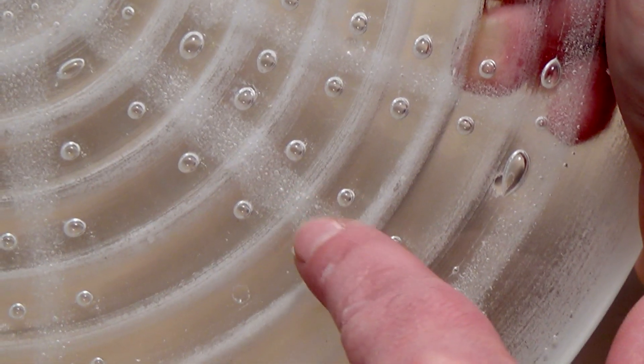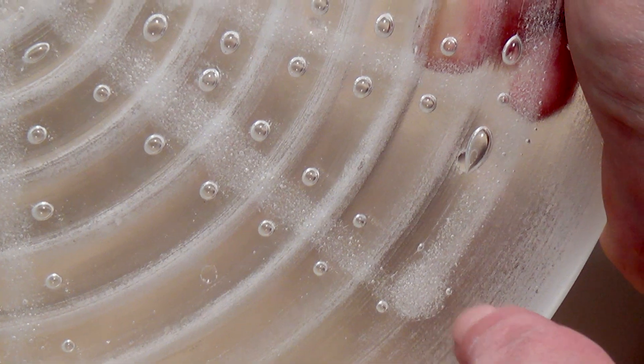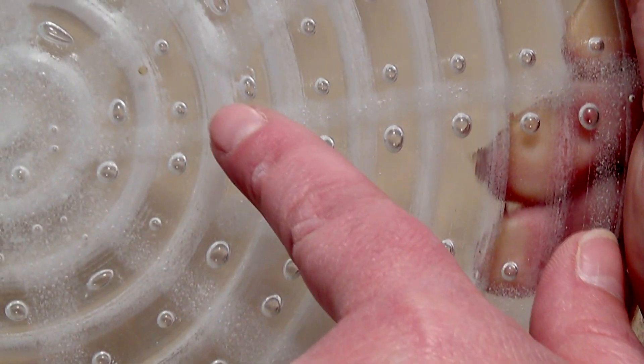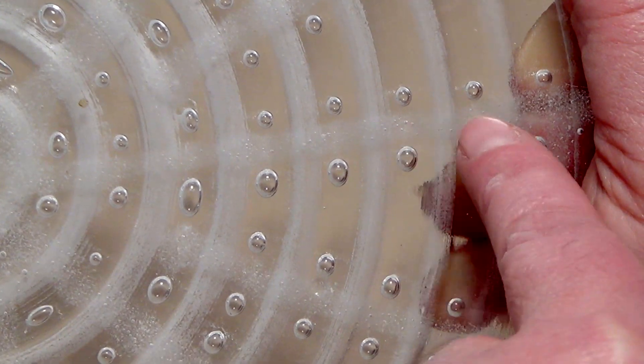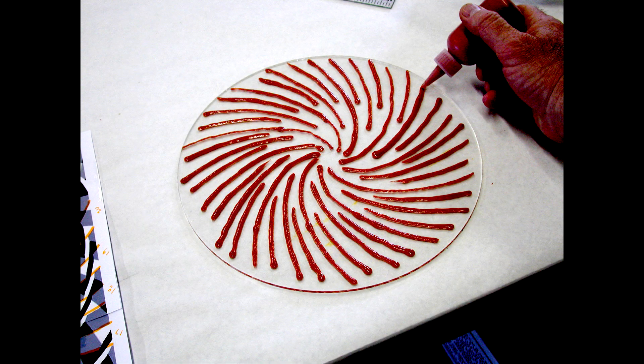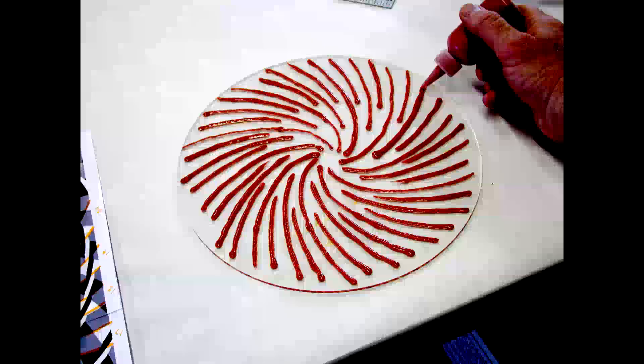Wherever liquid stringer lines cross the ridges of the textured plate, a cell is formed. The air that is trapped when the base glass drops down into the valley becomes encased. The bubbles will congregate close to the stringer lines.